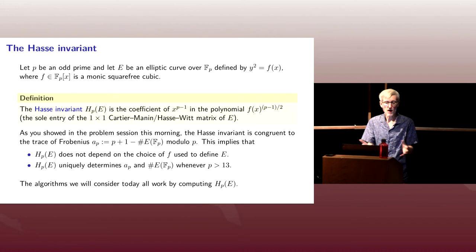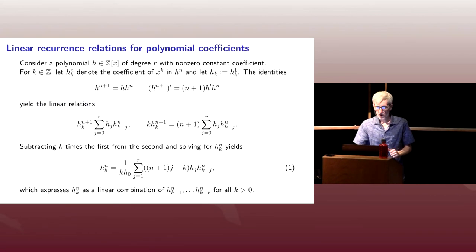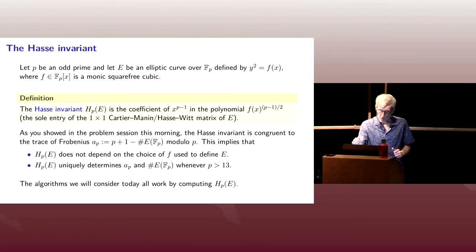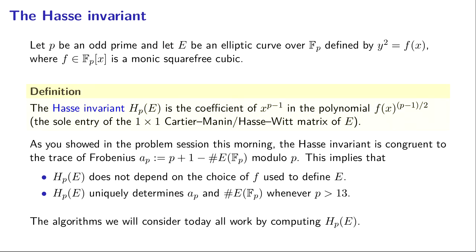All the algorithms we're going to look at today, the way they work is by computing the Hasse invariant, but we're going to look at three different methods for computing it. Any questions on the setup before we start digging in? The motivation for all the algorithms we're going to present today is, on the one hand, it seems crazy to exponentiate this polynomial and then have to go find this one coefficient in this polynomial that's got something like (3p-1)/2 of them. But these coefficients aren't completely random, they're related. There are relations between these coefficients, and we're going to develop some linear recurrences that will allow us to shift our focus from one coefficient of the polynomial to the next without ever having to write them all down.